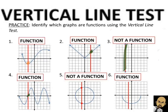Number five is a circle. The red vertical line touches the circular graph in two spots, so it fails the vertical line test and is not a function. Number six looks like a half circle — kind of like a happy face. The vertical line touches the graph at one spot and passes the vertical line test, so it is a function. You can draw your vertical line anywhere, but if it touches the graph at more than one point, it is not a function.